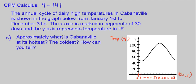Part A says approximately when is Cabanaville at its hottest? Well, we know the temperature is the hottest at this peak. I'm going to draw a line down to see when it's the hottest. I would say it's hottest around August. If this is January, February, March, April, May, June, July, August, it's hottest around right here in early August.